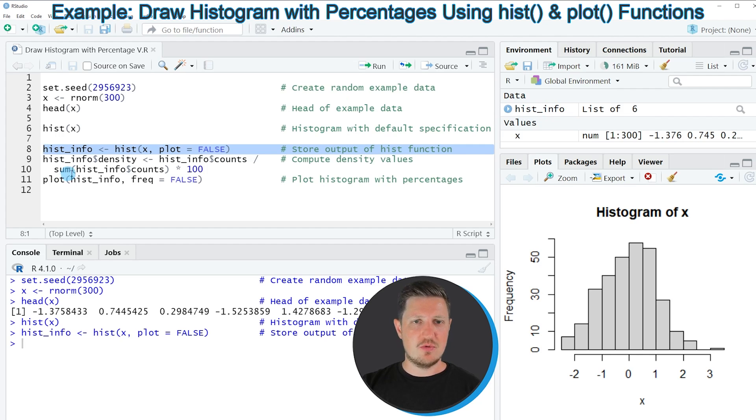And if we want to extract the percentages of our bars we have to run lines 9 and 10 of the code. So if you run these lines of code our hist_info object is updated.